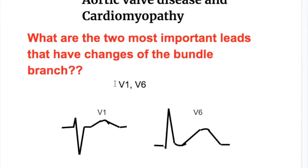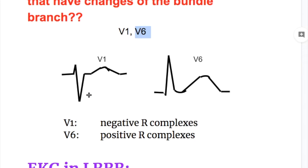What are the two most important leads that are checked in bundle branch? The anterior chest lead, the lead V1, and the lateral chest lead, the lead V6. In lead V1, there is negative R. And in lead V6, the R is positive.